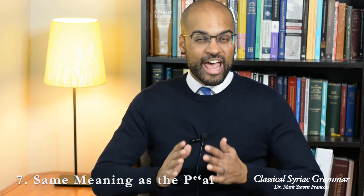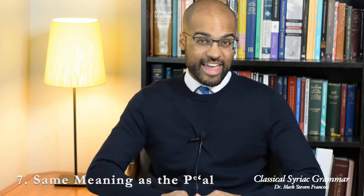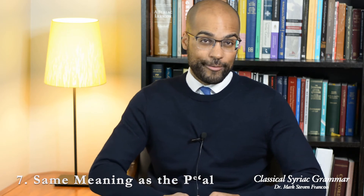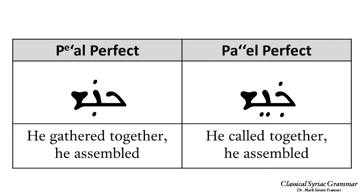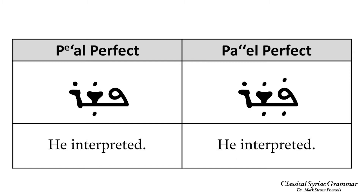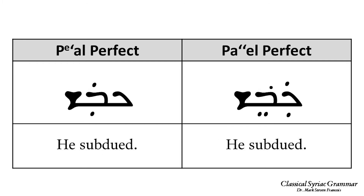Seventh, in some cases the meaning of a verb in the Pa'al is either identical or nearly identical to its meaning in the Pe'al. For example, 'kanash' means 'he gathered together' or 'he assembled' in both the Pe'al and Pa'al. 'Pashar' means 'he interpreted' in both patterns. And 'kavash' and 'kabesh' both mean 'he subdued' in their respective patterns.